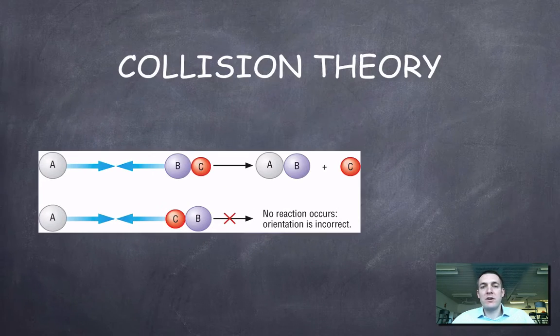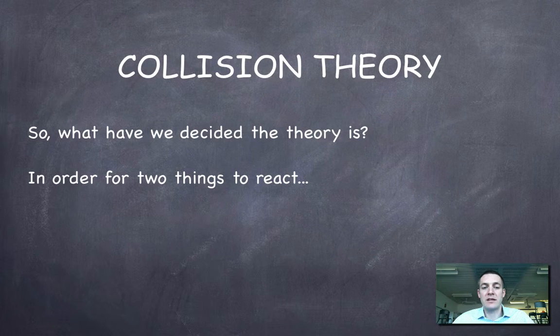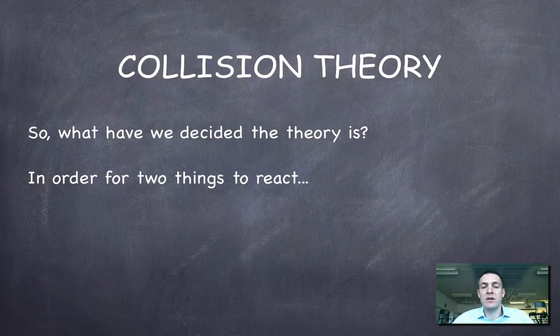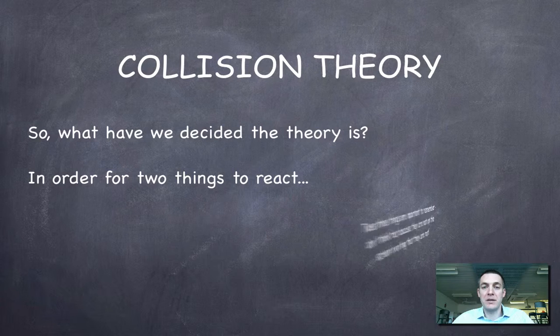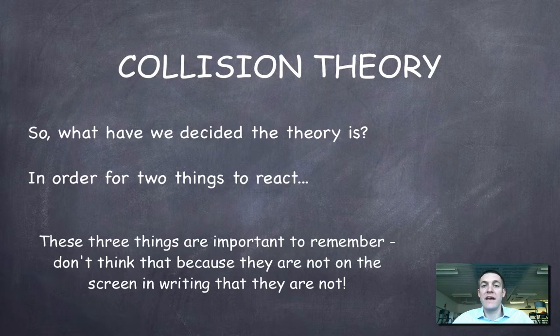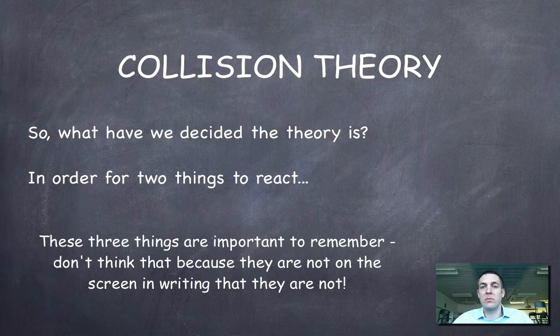So now we've kind of covered three things that have to happen in order for two particles to react. So we can put these three things together and we'll end up with what we call the collision theory. So in order for two things to react, the particles, first of all, have to be able to collide. They have to collide with one another with enough energy to exceed the activation energy or to reach the activated complex.